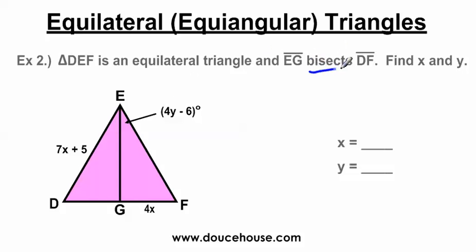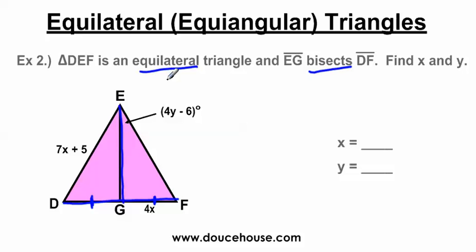Bisect might be something you're not very familiar with — it means to cut into two equal parts. So segment EG is bisecting side DF, which means DG is going to be equal to GF. We also know we have an equilateral triangle, so all the sides are congruent. Since it's equiangular, all angles are 60 degrees. Because this segment is bisecting the side, it also bisects the angle, so if we cut 60 degrees in half, each angle here is going to be 30 degrees.